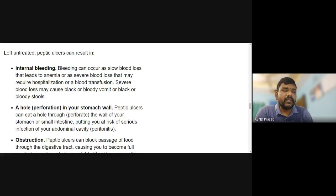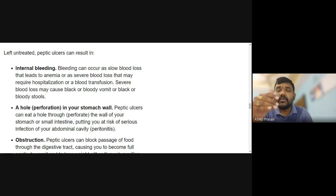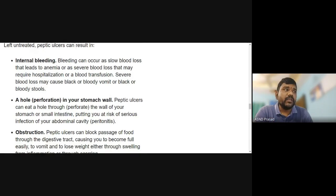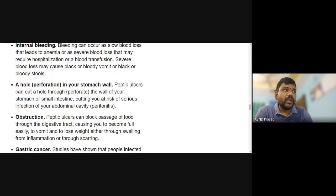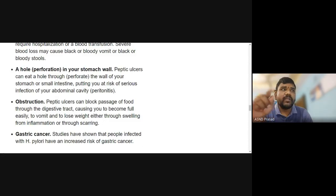What are the complications? Internal bleeding can occur in patients with peptic ulcers. A more severe complication is perforation — a hole in your stomach wall. When perforation occurs, the stomach lining is completely destroyed through its layers. This is a very serious risk factor that may require surgical intervention.